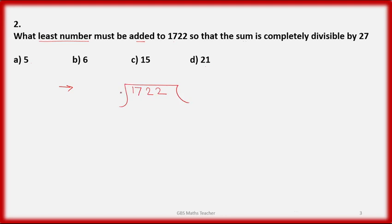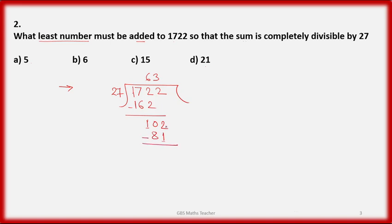Divide 1722 by 27. 27 times 6 gives 162. Then 27 times 3 gives 81. We get: 2 minus 1 is 1, 8 minus 2 is 21. Now we might think the answer is 21, but that is not the correct answer. The remainder is 21.